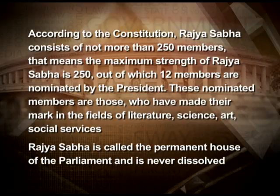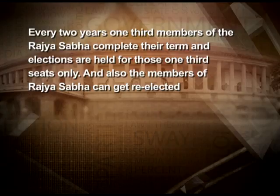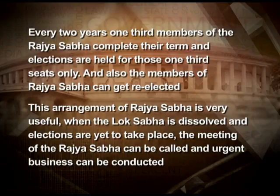Rajya Sabha is called the permanent house of the parliament and is never dissolved. Members of Rajya Sabha are elected for a term of 6 years, but all members do not complete their term at the same time. Every 2 years, one-third of the members complete their term and elections are held for those one-third seats only. Members of Rajya Sabha can also get re-elected. This arrangement is very useful when the Lok Sabha is dissolved and elections are yet to take place, as meetings of Rajya Sabha can be called and urgent business can be conducted.